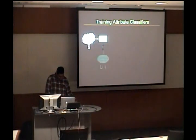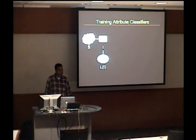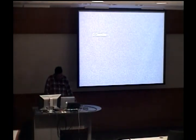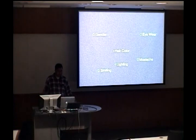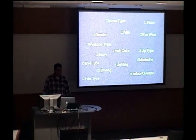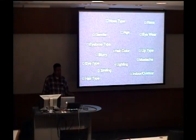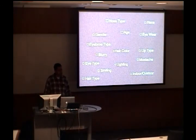Now we have images, so we need some sort of labeling service to label them. Ideally, we randomly choose a subset of our images and get them labeled — label the gender, whether they're wearing glasses, hair color, age, ethnicity, eyebrow type, and all this different stuff. What we need is a few hundred to a few thousand labels for each attribute, and we want to have lots and lots of attributes.